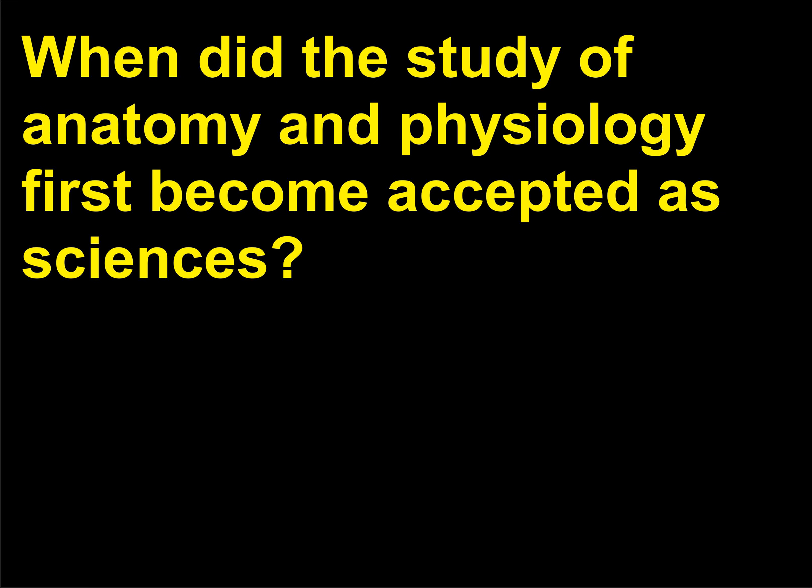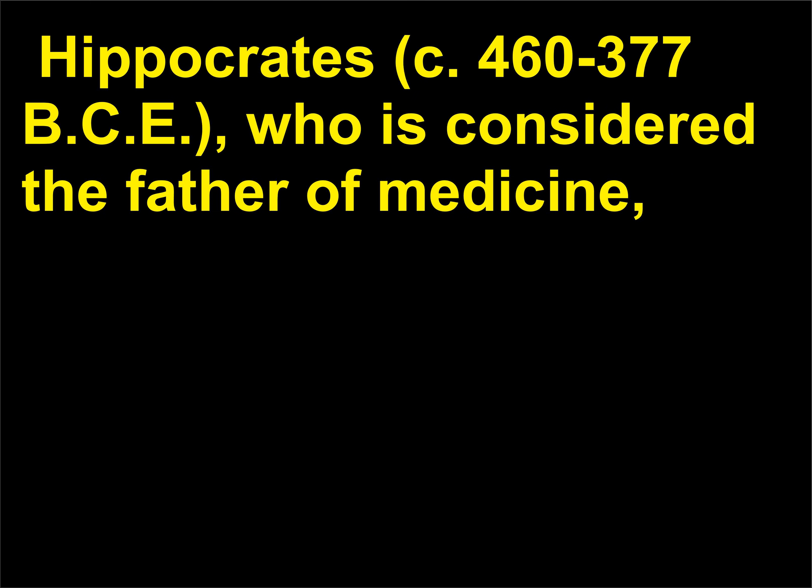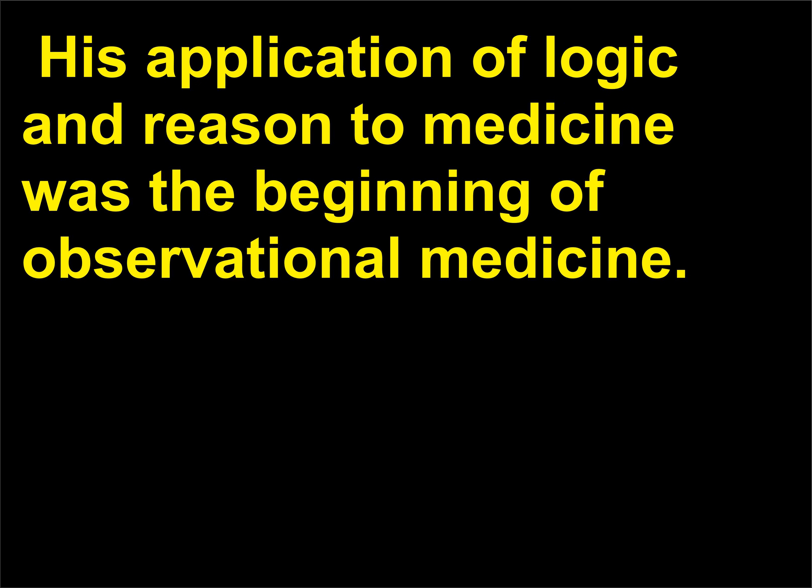When did the study of anatomy and physiology first become accepted as sciences? Anatomy and physiology were first accepted as sciences during ancient Greek times. Hippocrates, c. 460-377 BCE, who is considered the father of medicine, established medicine as a science, separating it from religion and philosophy. His application of logic and reason to medicine was the beginning of observational medicine.